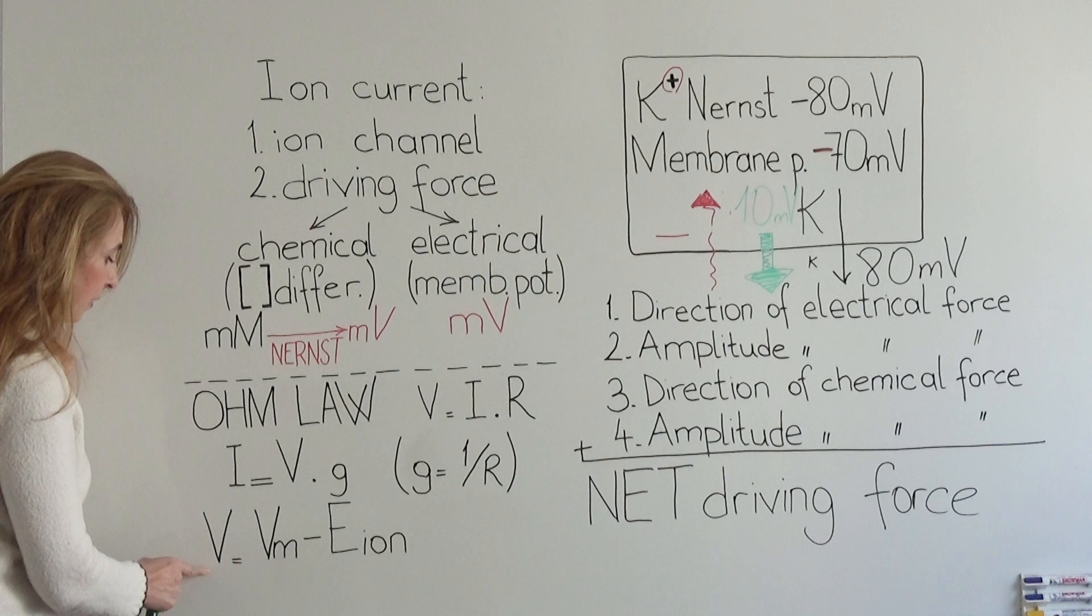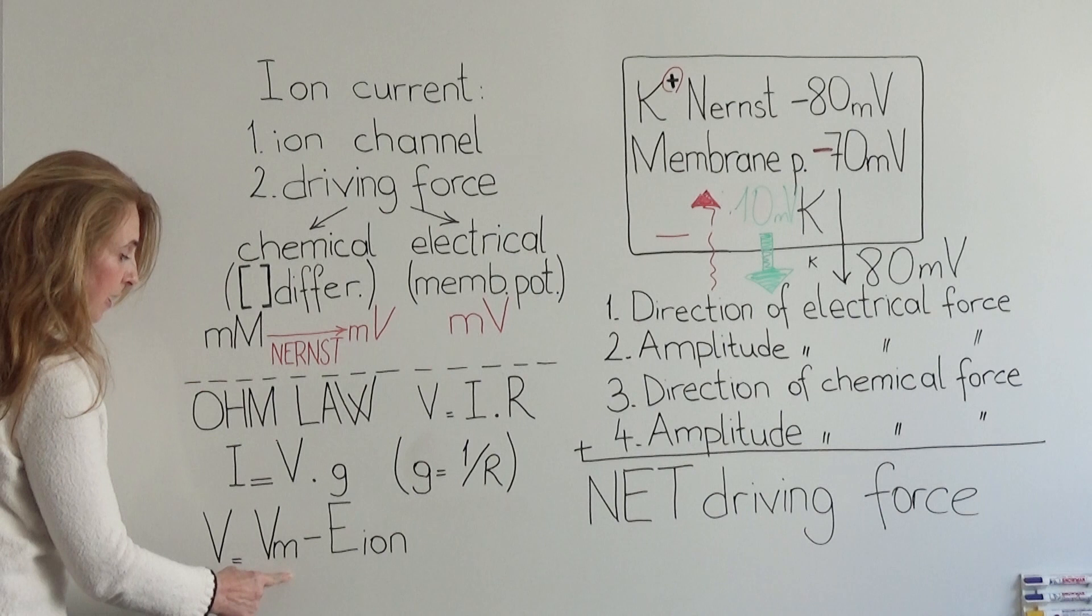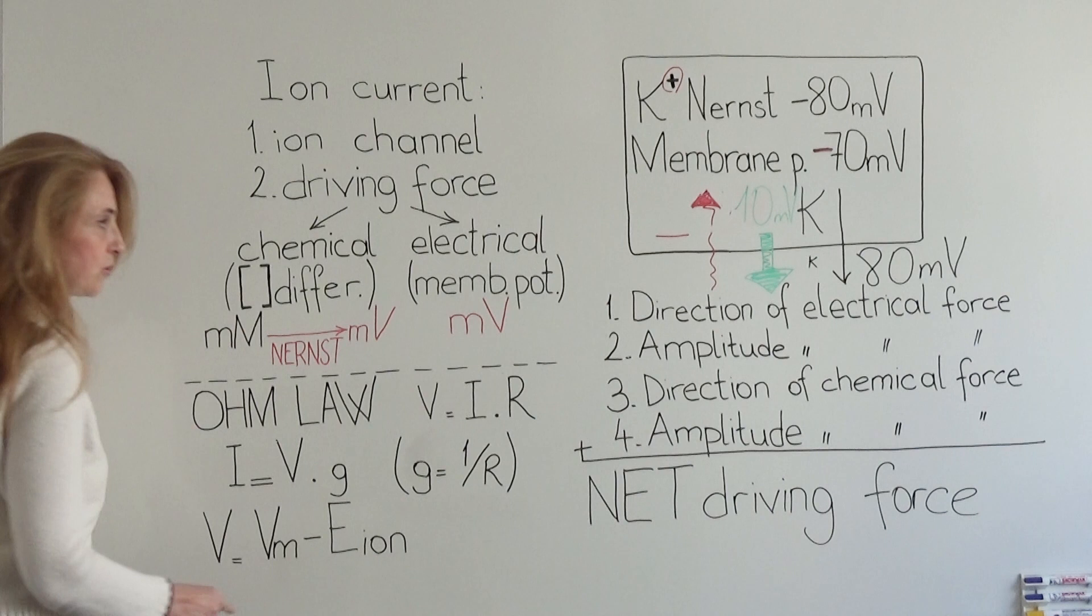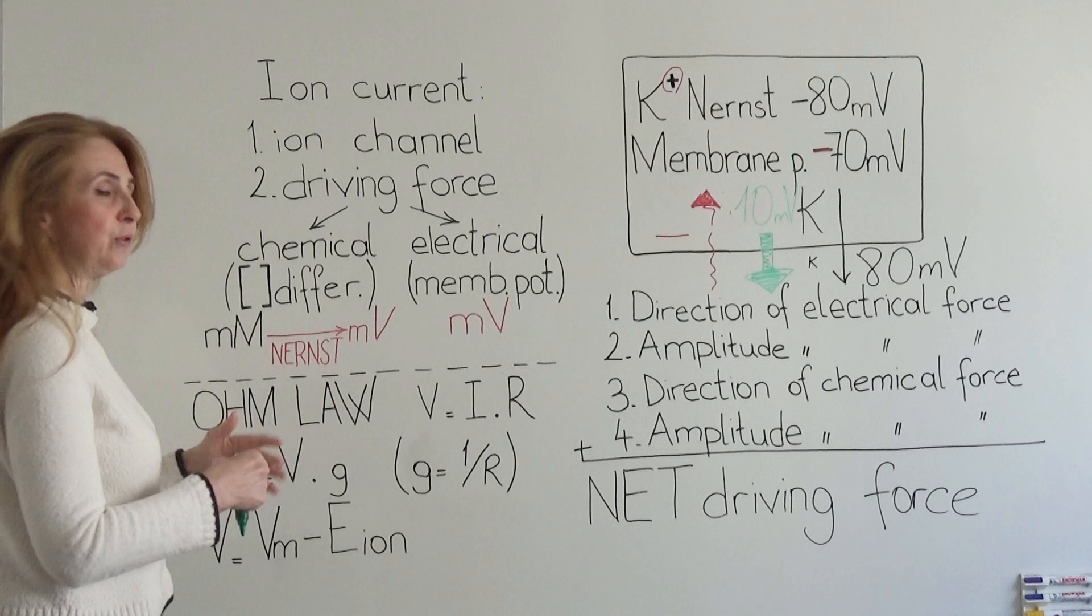How do we find the electrochemical force V? We find the difference between Vm, the membrane potential, and E of the ion, the Nernst potential of our ion that we are trying to understand.